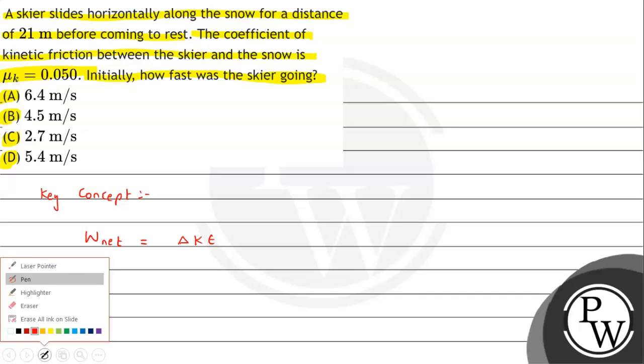So from this keeping in mind, we will try to answer the given question about the skier. He slides horizontally for a distance of 21 meters before coming to rest, so the final velocity is zero. And we have been asked to calculate the initial velocity.